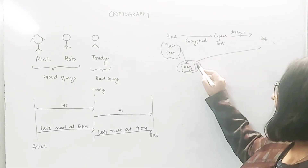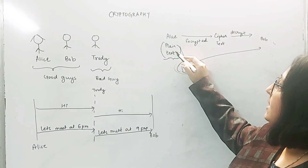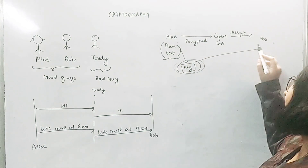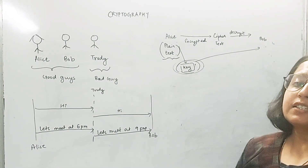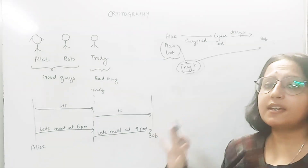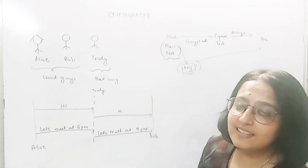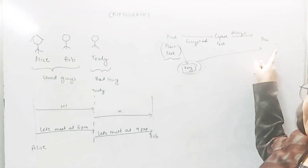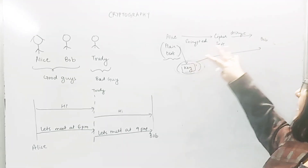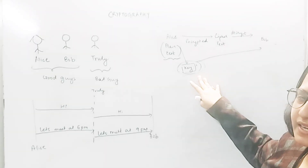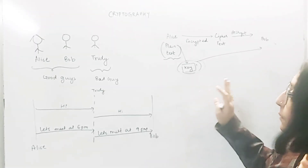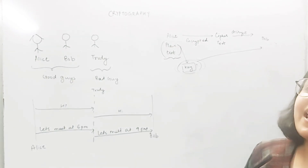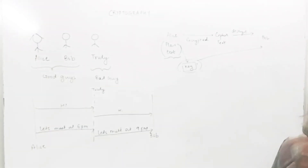This technique — where the same key is used at both the sender's end and the receiver's end — is called symmetric key cryptography. But since there is a problem of sharing this key over the channel and a risk of the key getting compromised, we came up with another kind of cryptography called asymmetric key cryptography.